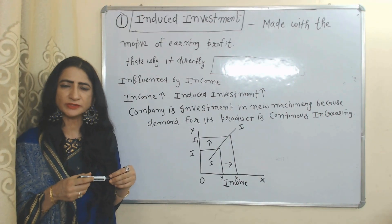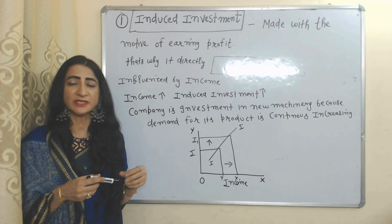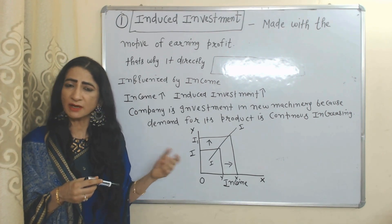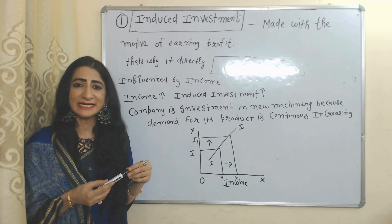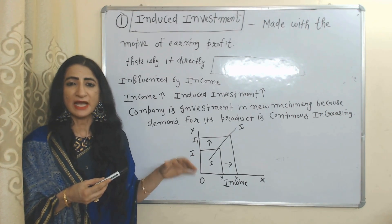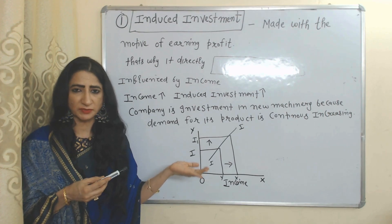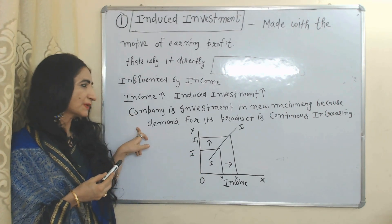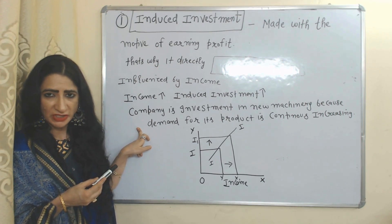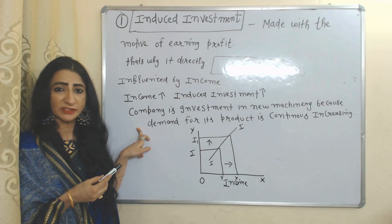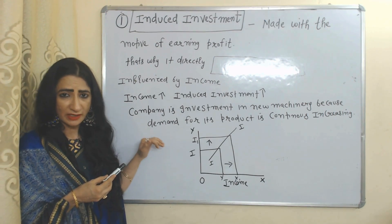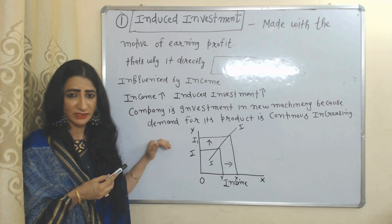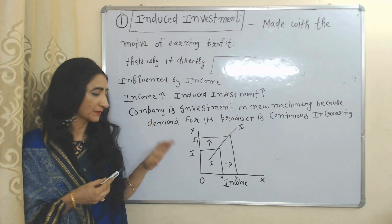First, induced investment. Induced investment is made with the motive of profit, and that's why it is directly influenced by income. As income increases, induced investment also increases; as income falls, induced investment also falls. For example, a company investing in new machinery because demand for its product is continuously increasing — the company is investing because its income is increasing.